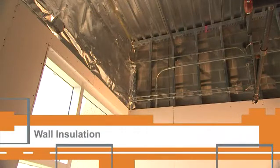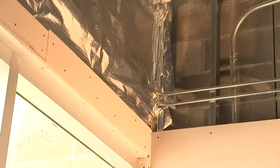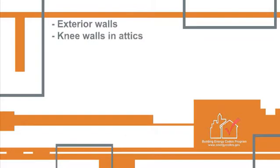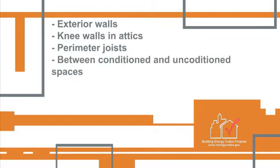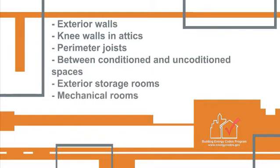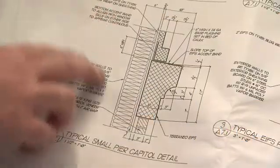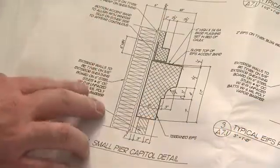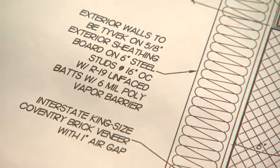All walls between conditioned space and unconditioned space must be insulated. This includes exterior walls, knee walls and attics, perimeter joists, and any walls between a conditioned space and an unconditioned space, such as exterior storage rooms, mechanical rooms, and skylight wells. Check the approved plans or the compliance documentation for the required R-values for the insulation.